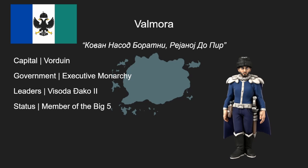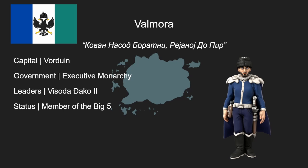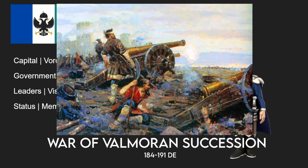Moving on, we have Valmora. Valmora's motto translates to 'forge out of conquest, created by peace.' Valmora is an executive monarchy, arguably more authoritarian than the other members of the Big Five — for a lot of historical and cultural traditional reasons. The leader of Valmora is Vizota Jaco II. However, there is a democratically representative parliament, and the leader of the government is Prime Minister Julia Alstogra. Valmora's always had a large martial spirit and proud warrior culture which fostered ideas of chivalry, honor, and nobility.